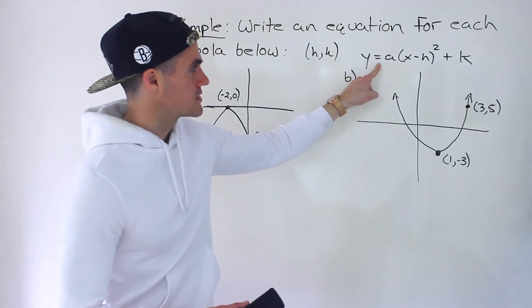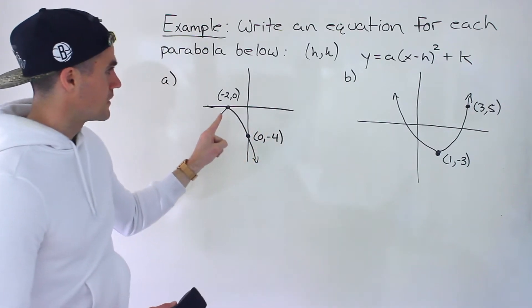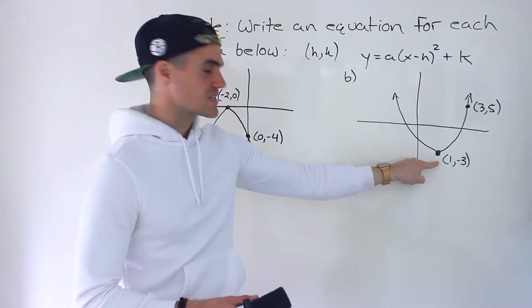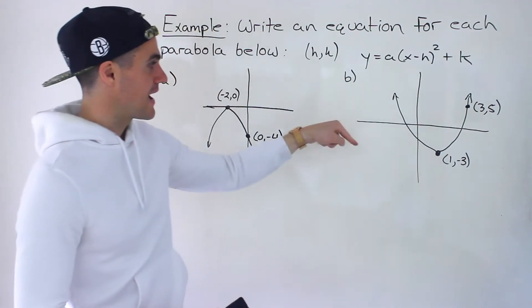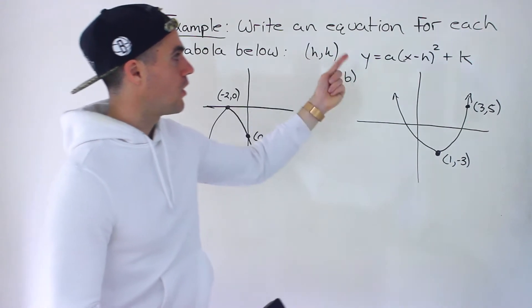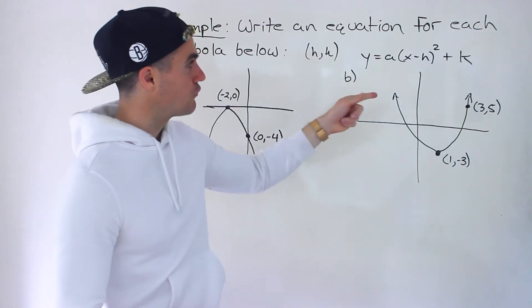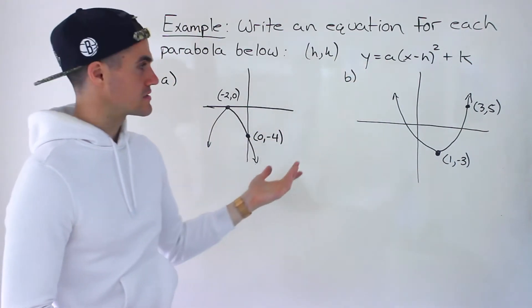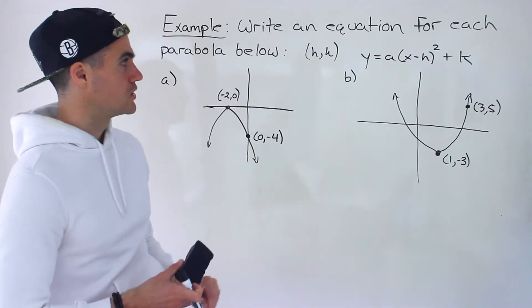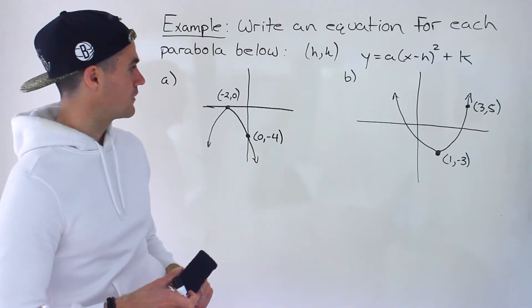What we want to do is use this format here as a quick review, because notice that each of these graphs gives us the vertex. And so what's nice about that is it automatically gives us the h and k value. So all we have to solve for then is the a value. That's all that's left. And then we could use that other point other than the vertex that's given to solve for that a value.